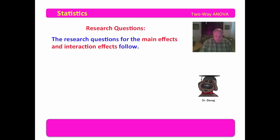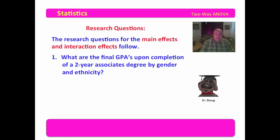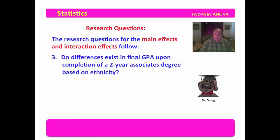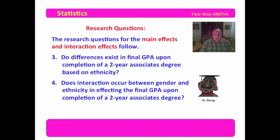The research questions for the main effects and interaction effects follow. The first is: what are the final GPAs upon completion of the two-year associate's degree by gender and ethnicity? This is a descriptive question used to collect descriptives, and it does not require hypotheses. The second question is: do differences exist in final GPA upon completion of a two-year associate's degree based on gender? The third: do differences exist based on ethnicity? And the last: does interaction occur between gender and ethnicity in affecting the final GPA upon completion of a two-year associate's degree? This question is added because we're doing a two-way ANOVA.